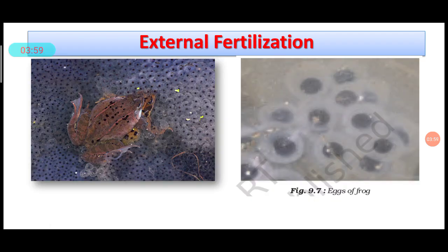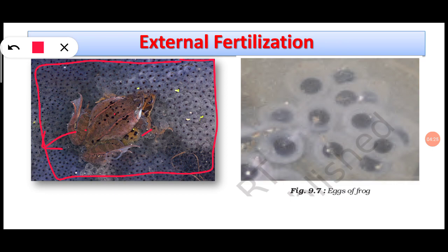Let's talk about external fertilization. Here you can see one male and one female frog together. During this process, the female frog releases a very large number of eggs outside the body, and the male also releases its sperms over them in water. So both a large number of eggs and a large number of sperms are released in water, and many eggs get fertilized with the sperms.